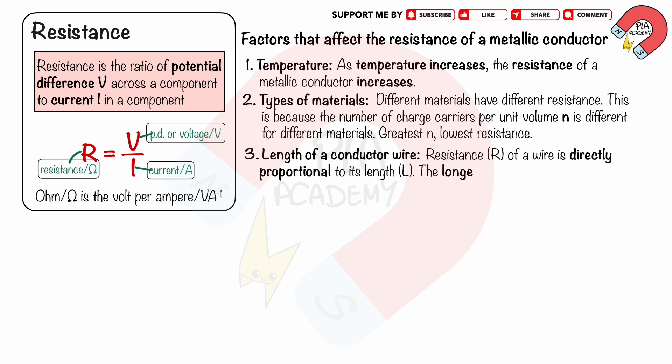Factor 3: Length of a conductor wire. Resistance R of a wire is directly proportional to its length L. The longer a wire, the greater its resistance, and vice versa. This is because electrons collide with more ion atoms, decreasing the rate of flow of charges, and so there will be more resistance.